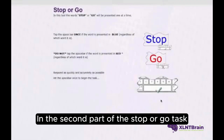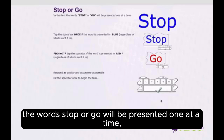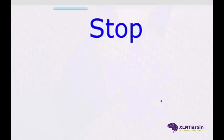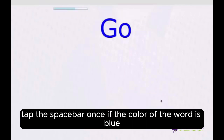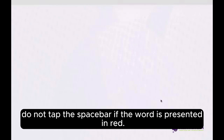In the second part of the Stop or Go task, the words Stop or Go will be presented one at a time. Tap the space bar once if the color of the word is blue. Do not tap the space bar if the word is presented in red.